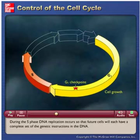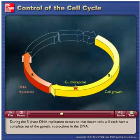During the S phase, DNA replication occurs so that future cells will each have a complete set of the genetic instructions in the DNA.